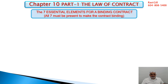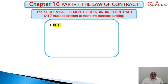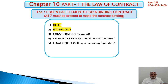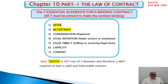The seven essential elements are: first, offer; second, acceptance — we'll discuss these two in this part. Third is consideration — without consideration, meaning money, gift, or seal, it is not a binding contract. Fourth is legal intention, fifth is legal object, sixth is capacity, and seventh is consent. Note that a deposit is not one of the seven. Many people think that without a deposit there is no valid contract, but deposit is not one of the seven essential elements.